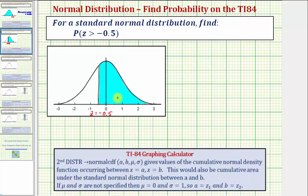To find this area and the probability that z is greater than negative 0.5, we'll be using the normal CDF feature on the TI-84 graphing calculator. We'll enter a, b, mu, the mean, and sigma, the standard deviation.